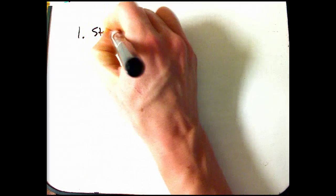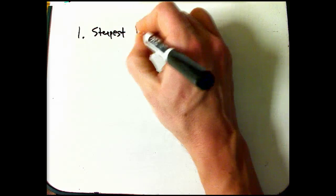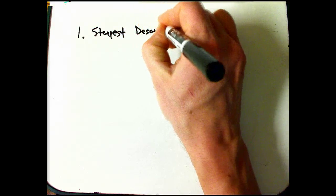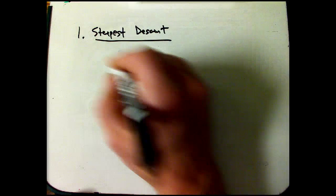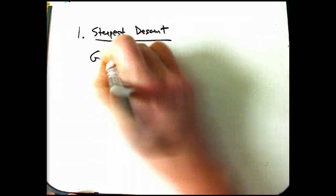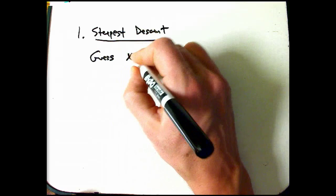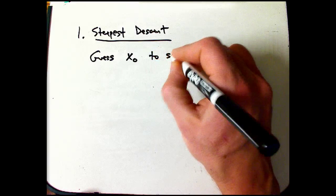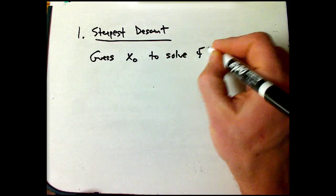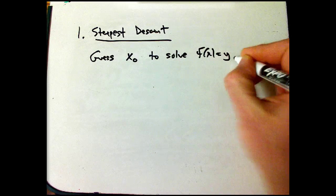I think the most intuitive one, it's not the one we're going to use in the first version of the proof, is steepest descent. So we guess, here's a very rough version of steepest descent, there's so much more you can say about it. We guess some x naught to try to solve f of x equals y, it's not going to work.